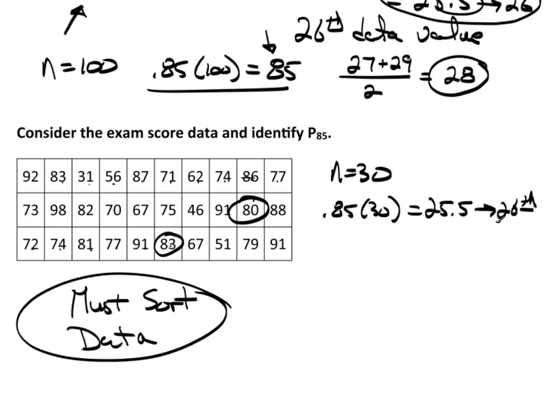Okay, so why is it that I go to the 26th position? Which, by the way, once I sort this data and I actually go to the 26th position, I will find that the true 85th percentile for this data set is actually 91. 91 is in the 26th position. So again, why is it I go to the 26th?